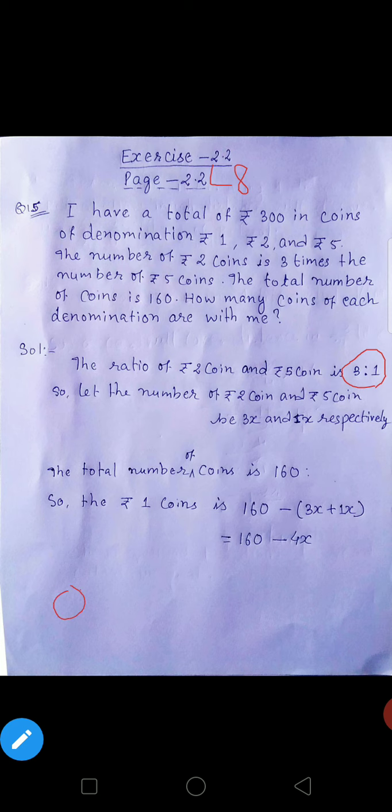2 rupiah, 5 rupiah, yeh dono ka kya ratio? 3 is to 1. So let the number of 2 coins and 5 coins be 3x and 1x.